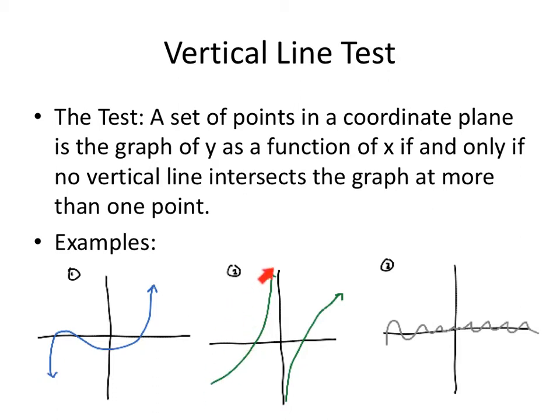Pretty much any vertical line I could put up here is only going to hit the graph once. Any vertical line I hit is going to hit the graph at most once. Look, this vertical line doesn't hit the graph at all. But never at more than one point. Every vertical line only hits the graph at one time. These three graphs all pass the vertical line test. They are all graphs of a function.